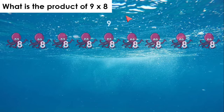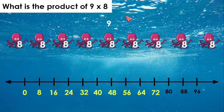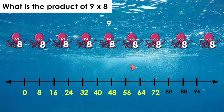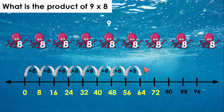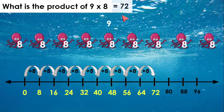9 times 8. Let's go ahead and skip count: 8, 16, 24, 32, 40, 48, 56, 64. And let's add 8 more. We get 72. So 9 times 8 equals 72.